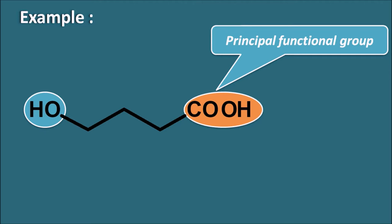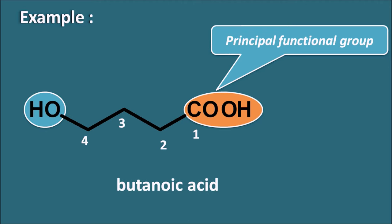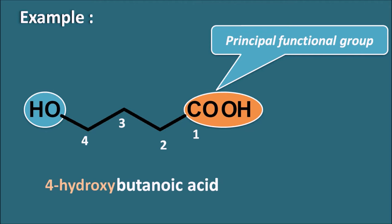Carboxylic acid is considered the principal functional group because of higher preference. We can start numbering from this carbon: 1, 2, 3, and 4. This structure has a 4-carbon chain with carboxylic acid at the first position, so it is represented as butanoic acid. At the fourth position it has a hydroxyl side chain, giving 4-hydroxybutanoic acid.